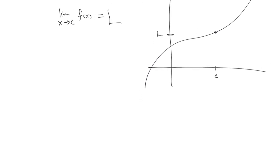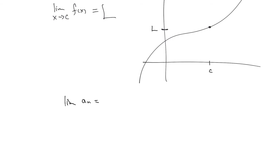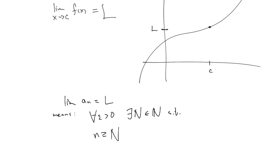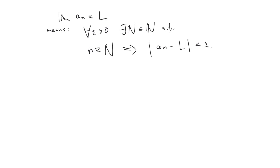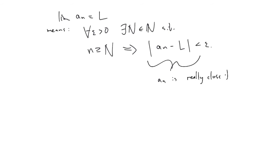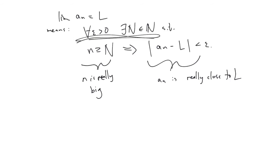Let me refresh our memory about the definition of the limit of a sequence. When we say limit of a_n equals L, this means: for all ε > 0, there exists N (a natural number), such that n ≥ N implies |a_n − L| < ε. Your interpretation: |a_n − L| < ε means a_n is really close to L, and n ≥ N means n is really big. Even though the definition doesn't actually say epsilon is small or N is big — those are built into the for-all and there-exists quantifiers.